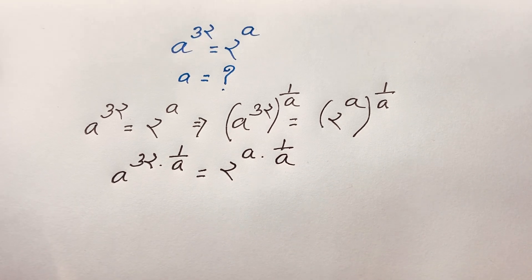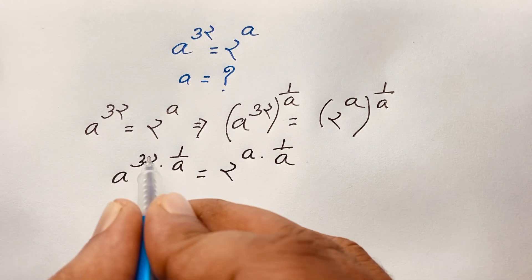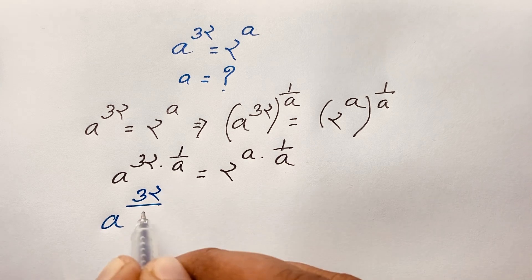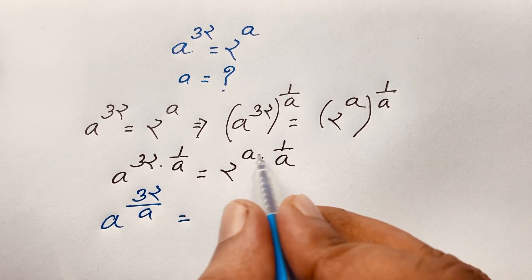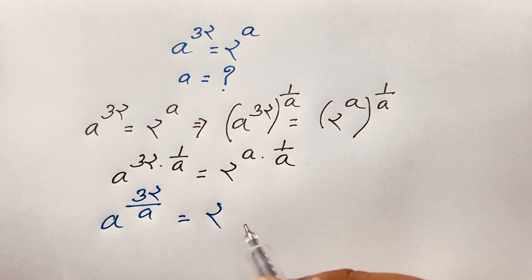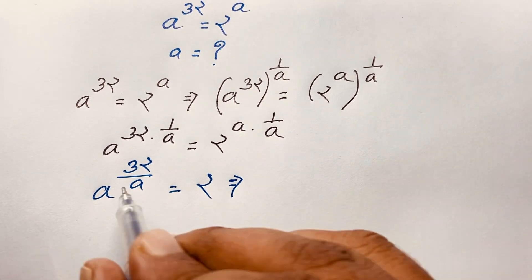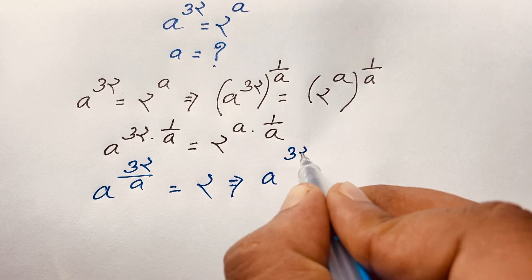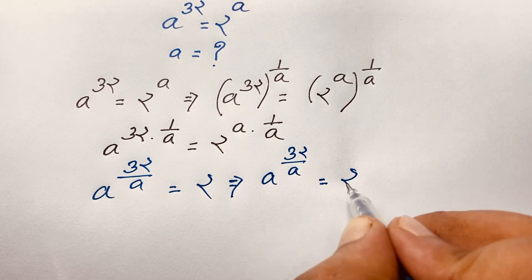Here is a to the power 32 times 1 over a. It will be 32 over a is equal to — and this a and this a cancel. We find out here is 1. So at this moment, we find out a to the power 32 over a is equal to 2.